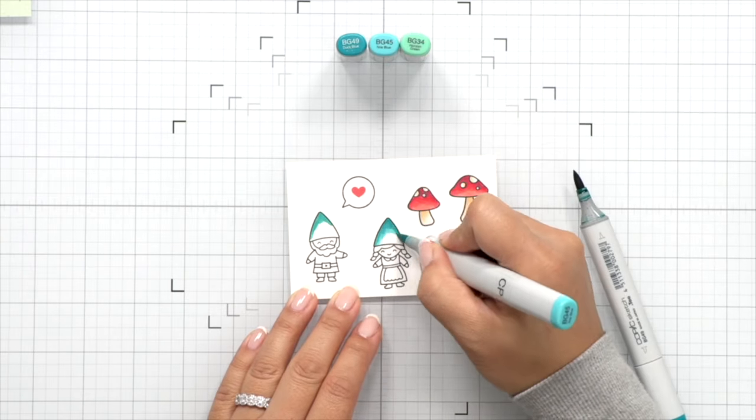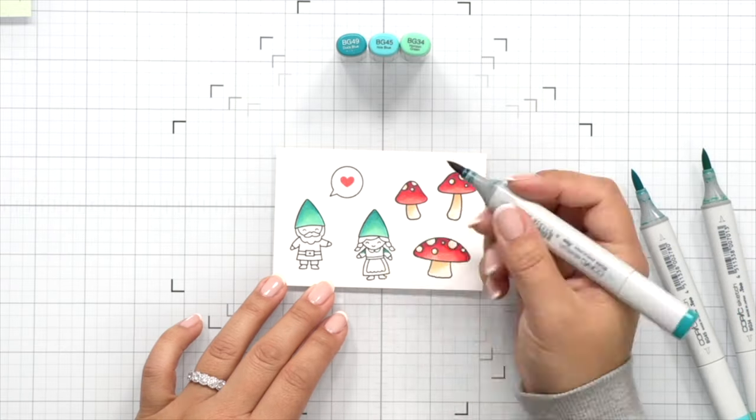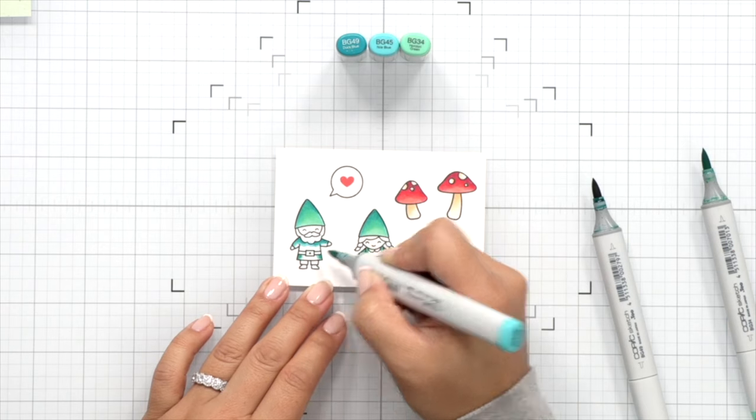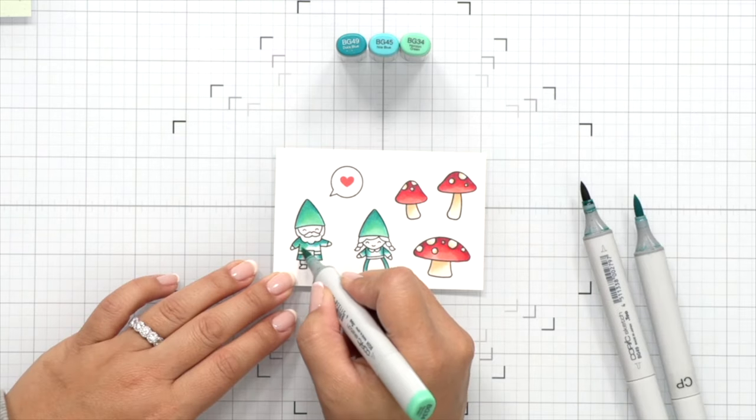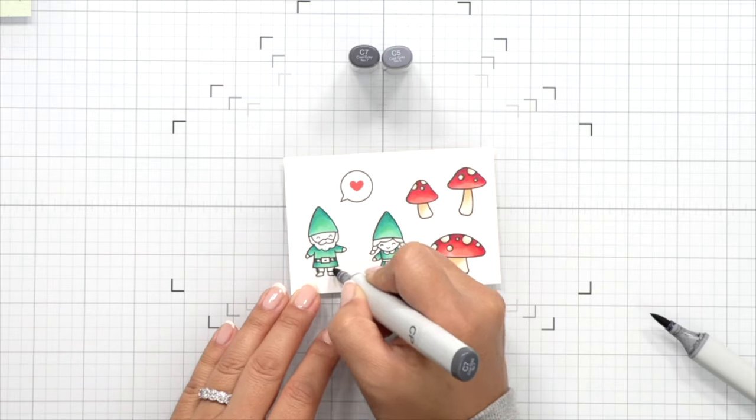Now for the gnomes, I wanted to give them a little bit of a different color. I'm using some dark teals here to color their outfits and their hats. Since we already have lots of red on our card, I thought using some teal on these gnomes would be a little bit more fun than using the traditional red and blue colors.